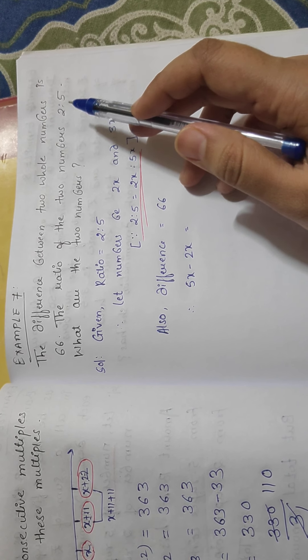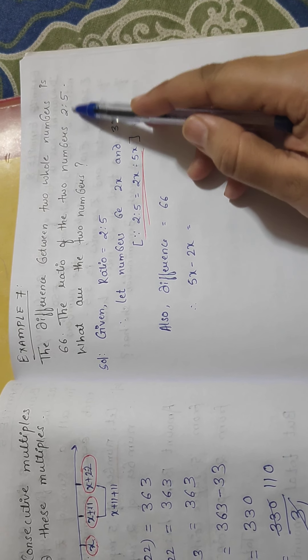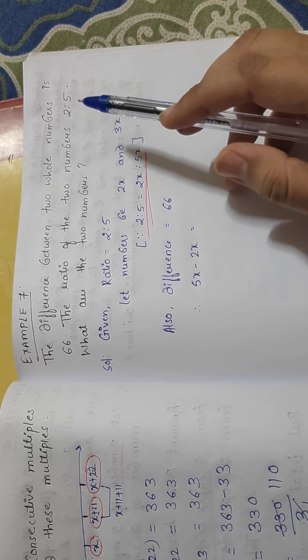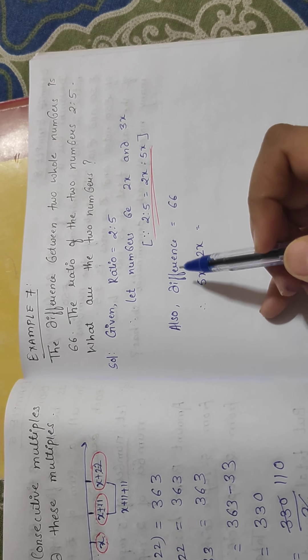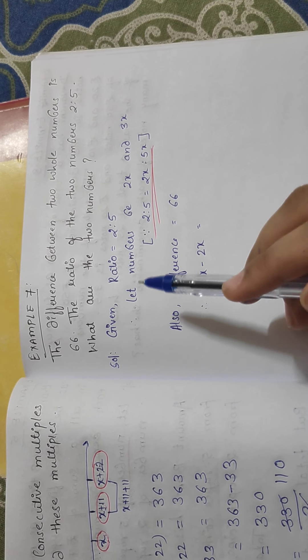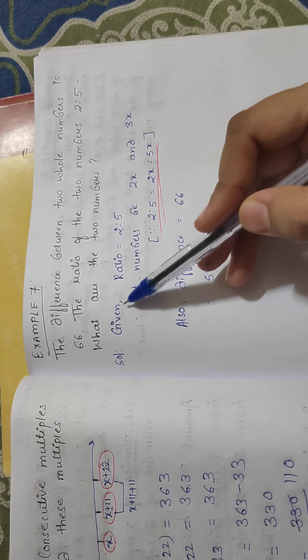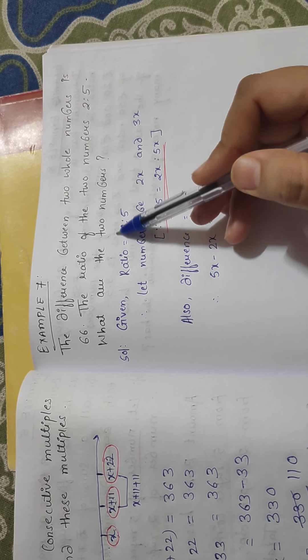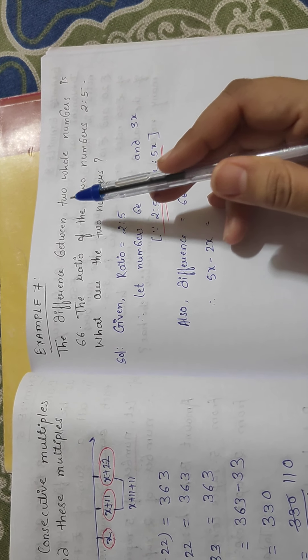So here they have given the ratio of two numbers. By using this ratio and this difference, we have to find out the numbers of which if we subtract we'll get the answer as 66. So here what is given? Ratio is given 2 is to 5. This ratio is given of that numbers whose difference is 66.